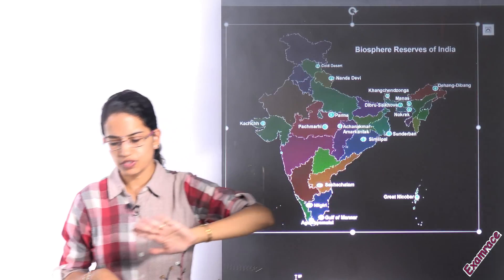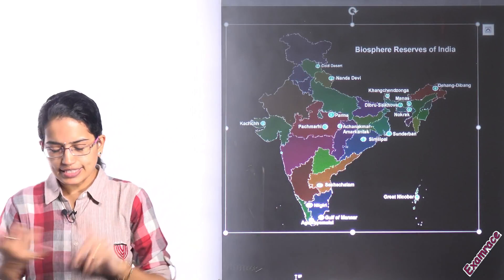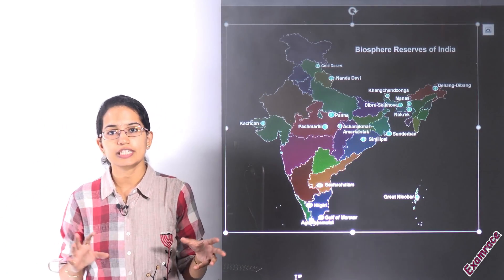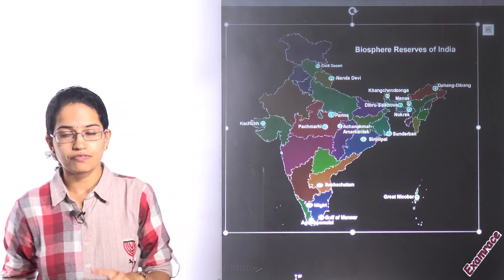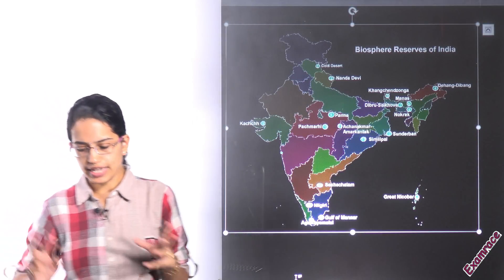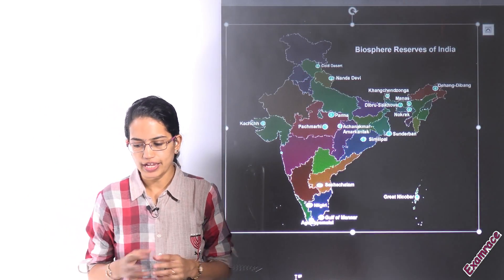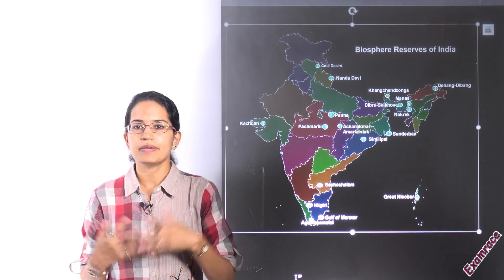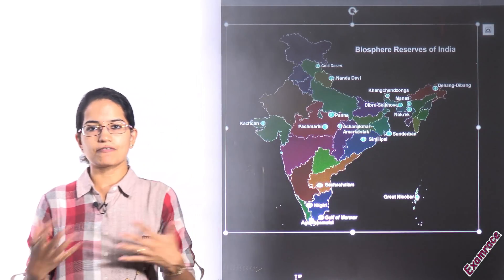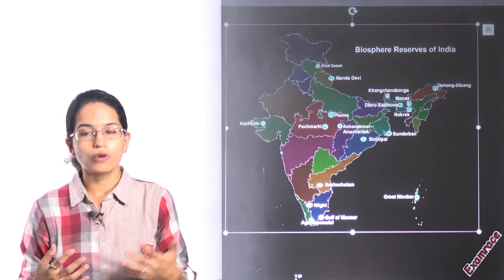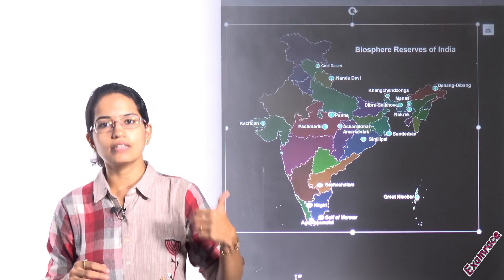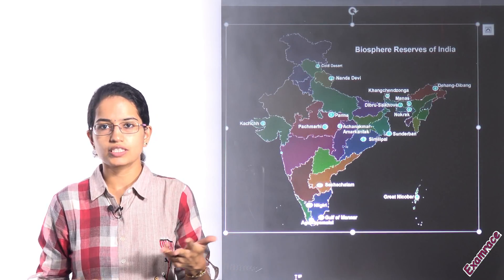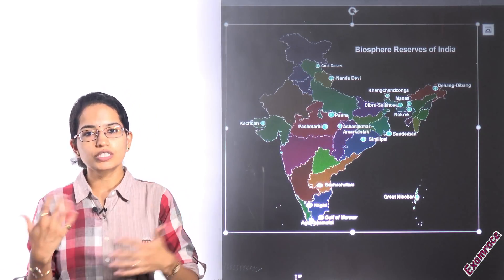The Sundarbans biosphere reserve is located where the Ganga and Brahmaputra rivers converge in the delta region. These biosphere reserves fall under IUCN Category 5. The IUCN classification category is very important, along with the basic differences between the three: the national park, wildlife sanctuary, and biosphere reserve.